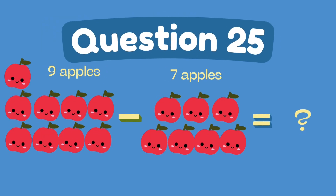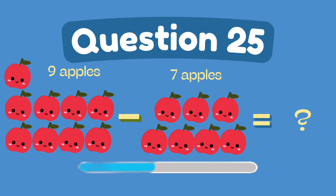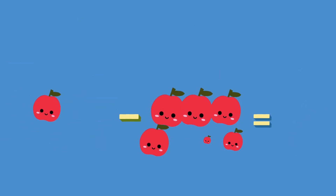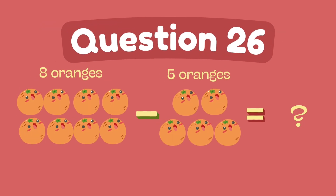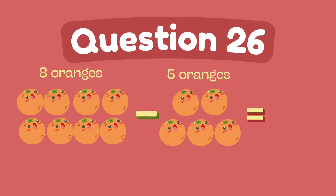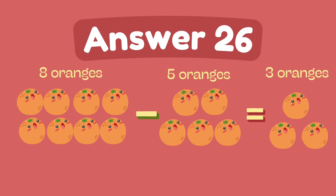What is nine minus two? What is nine minus seven? The answer is five.